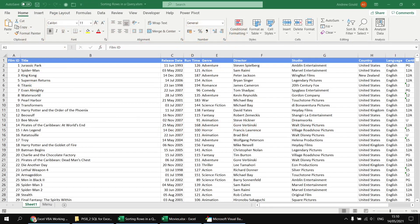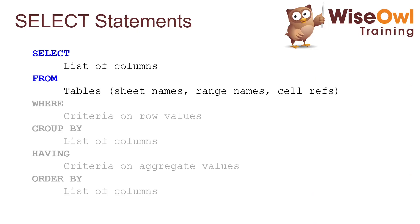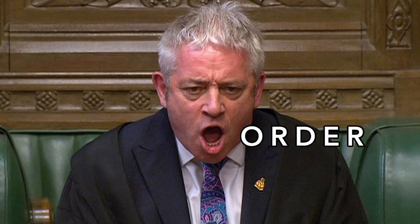For our first example of sorting rows in a query, I'd like to return the same set of results but sorted alphabetically by film title. To do that we need to modify our SELECT statement. In the previous part we focused on the SELECT list and the FROM clause. To sort query results we need to bring in an extra clause — the ORDER BY clause — which for some reason always makes me think of John Bercow, but I'll do my best not to pronounce it the same way.